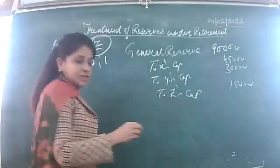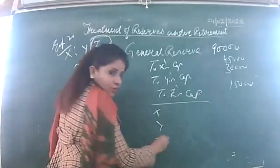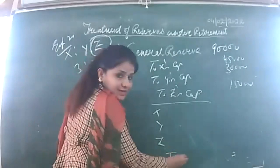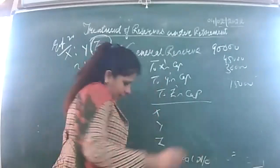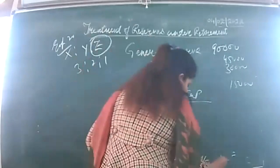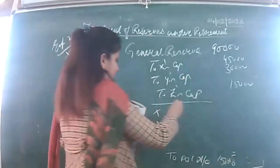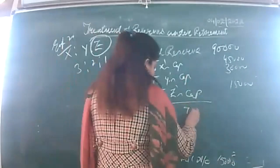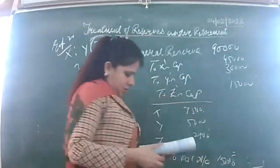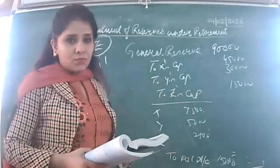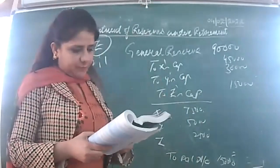Similarly, we have a 300 debit balance — it is a loss. When there is a loss, partners are debited: X debit, Y debit to P&L account. Writing it off: 15,000 into 3/6 is 7,500; 2/6 is 5,000; 1/6 is 2,500. Being loss distributed among all partners at the time of Z's retirement.